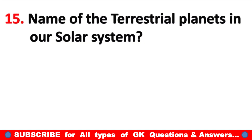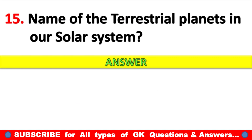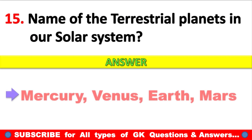Question 15: Name the terrestrial planets in our solar system. Answer: Mercury, Venus, Earth, and Mars.